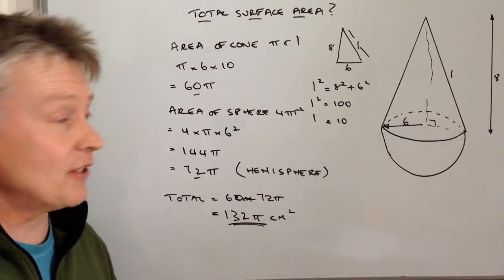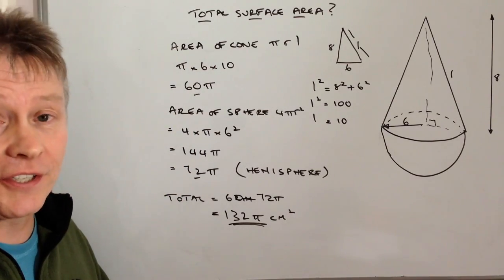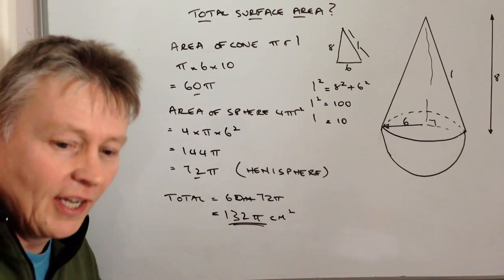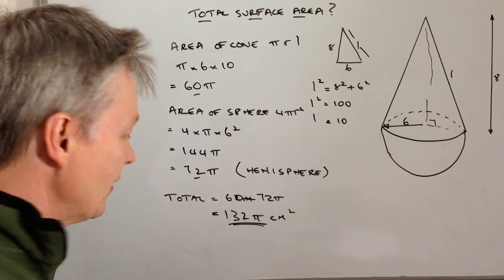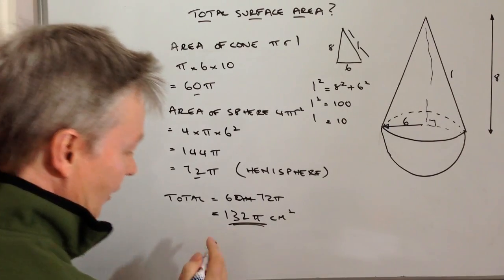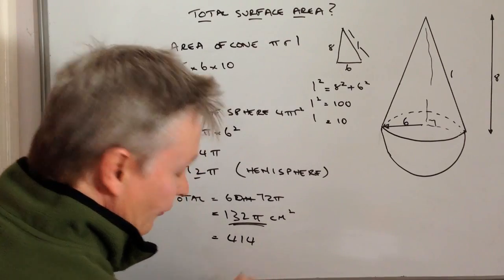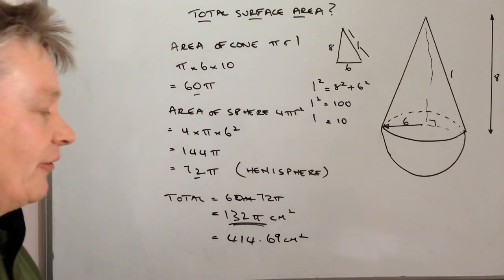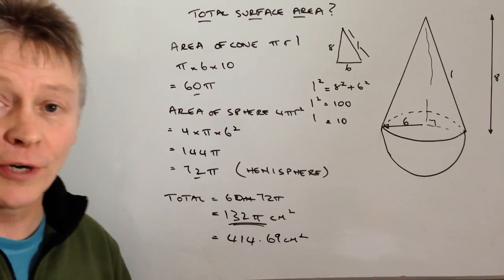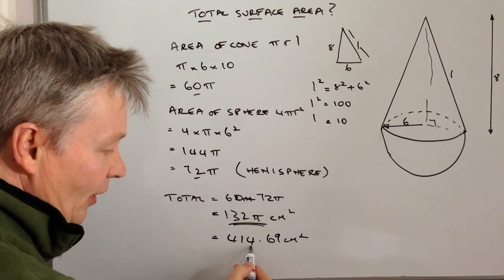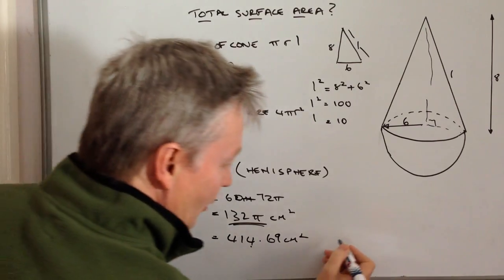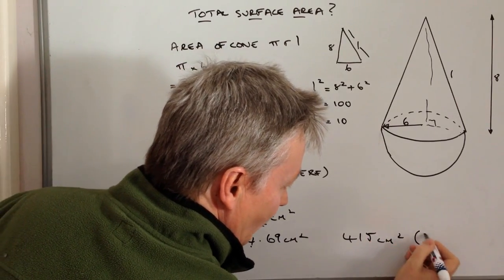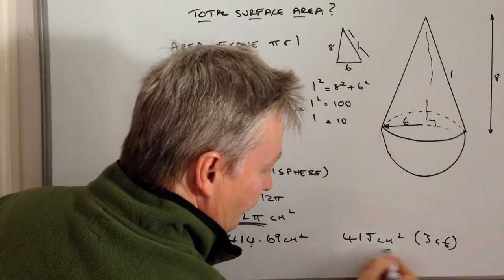Now that's actually the overall surface area. However, the question might ask you to calculate that and give this information, say in this particular case to three significant figures. So if I pop that into a calculator it's going to give me 414.69 cm². And if I want to write that to three significant figures, I'm going to change that because of the 6. So to three sig figs it's going to be 415 cm².